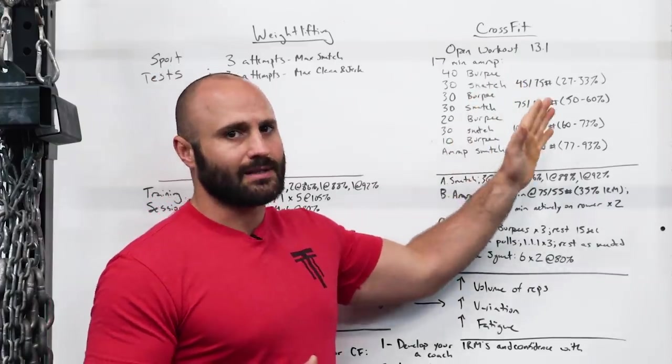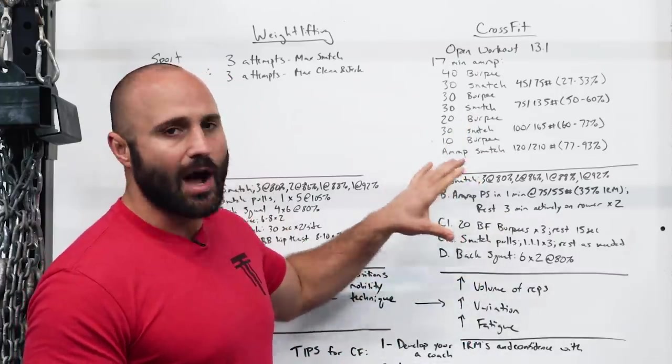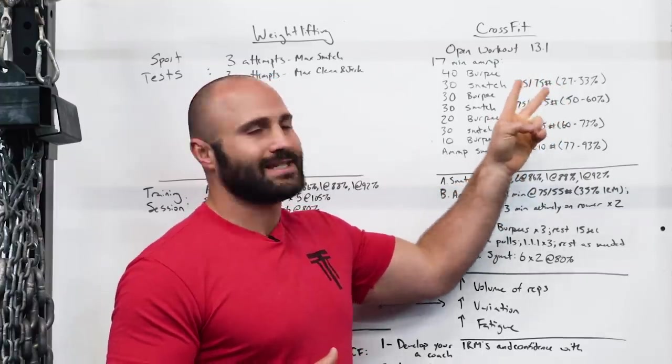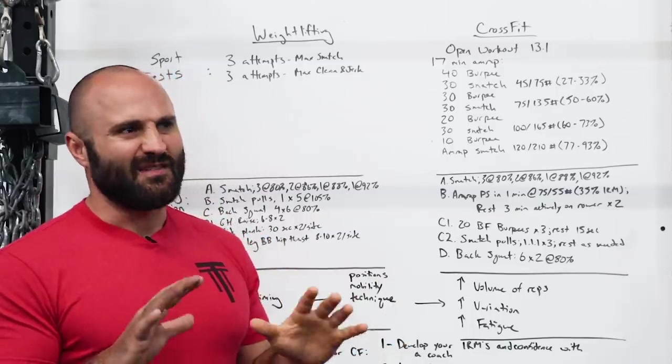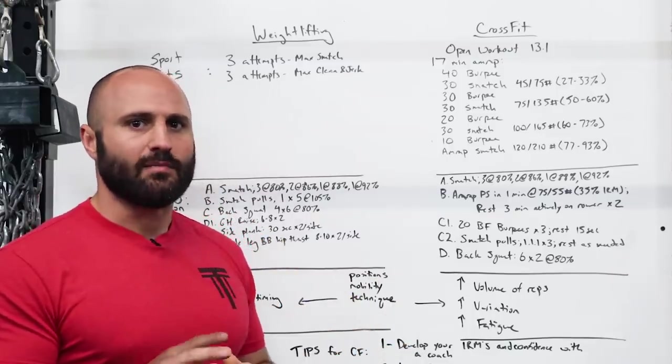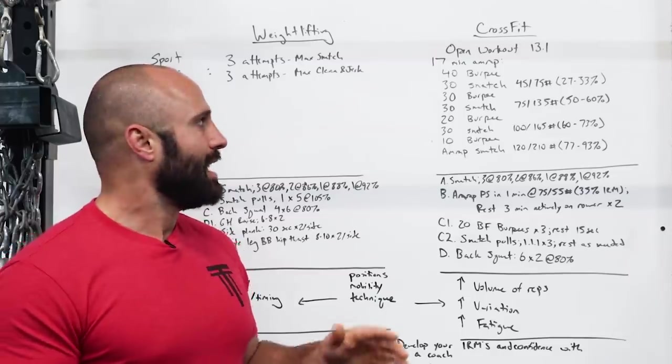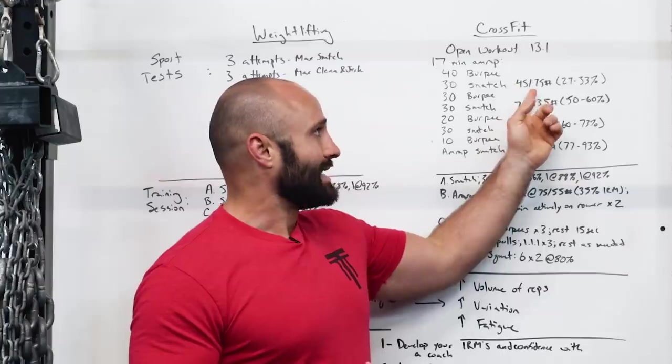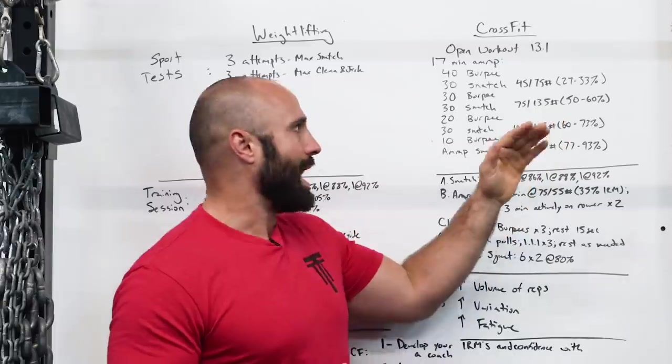To give some context on percentages, I used a 225 to 275 pound max snatch, which would probably be an advanced or high-level intermediate or low-level advanced CrossFit male athlete. If you take that as their one rep max, then this weight at 75 pounds would be approximately 27 to 33% of their one rep max.